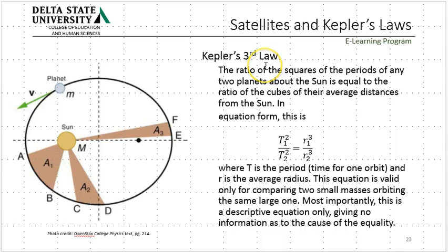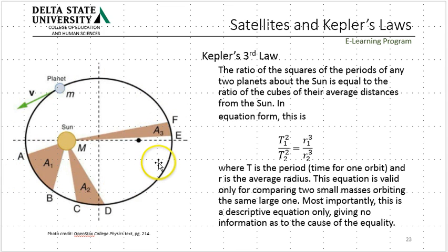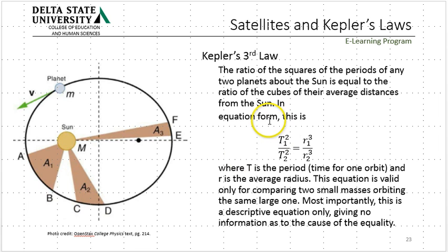Kepler's third law: Newton worked out that the period of a planet going around the sun — for the Earth the period is one year — follows this relationship: the ratio of one period squared to the other period squared is proportional to the ratio of the radii cubed.